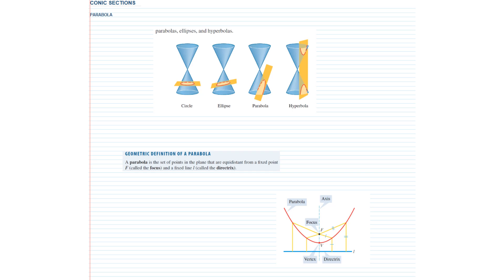Now that we have learned about the basic structures of different conics, let us talk about the details. The very first conic section we are going to discuss is a parabola. The geometrical definition of a parabola says it is the locus of all those points whose distances from a fixed point called the focus is always equal to its distances from a fixed line called the directrix.